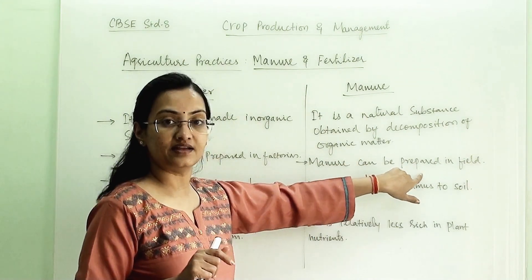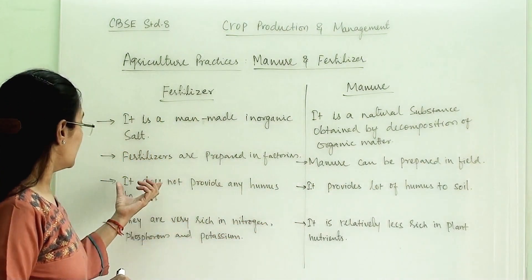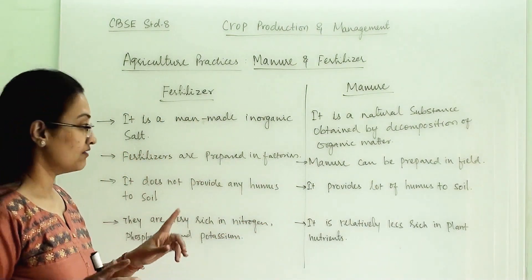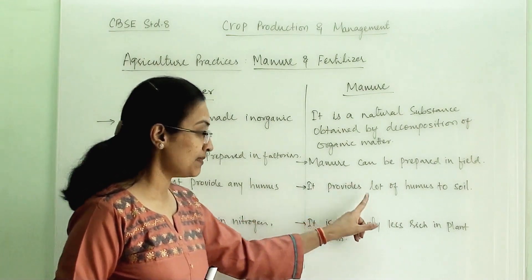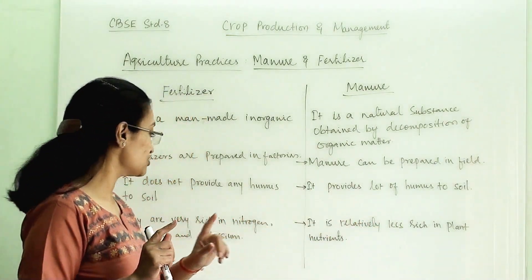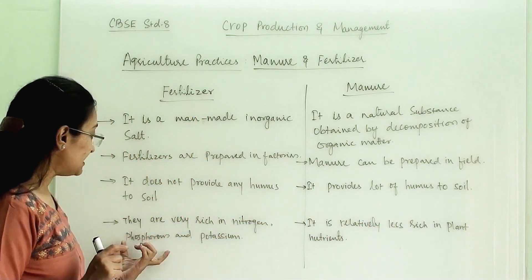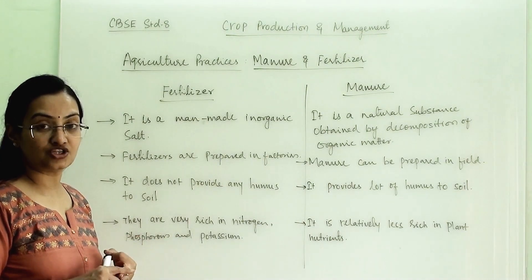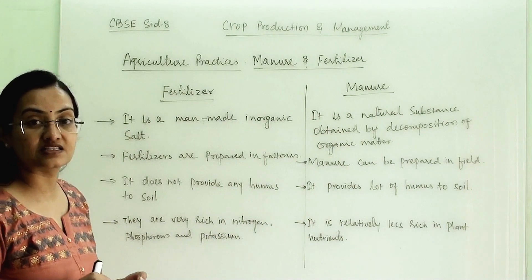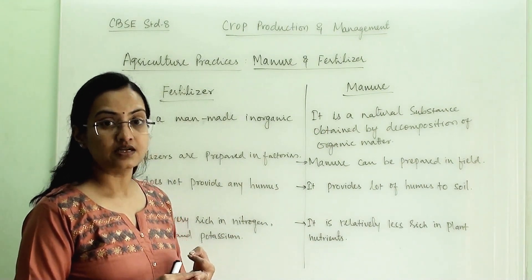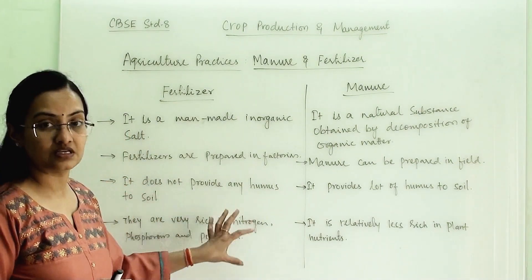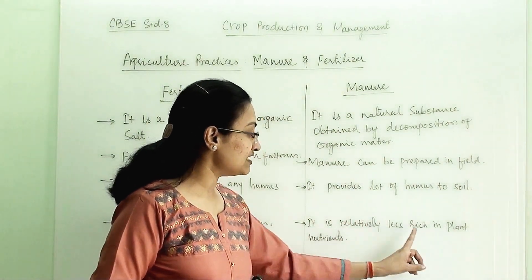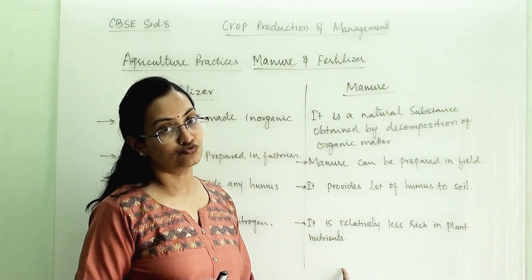Manure can be prepared in the field. Fertilizer will not provide any kind of humus to the soil, whereas manure will provide a lot of humus to the soil. Fertilizers are very rich in nitrogen, phosphate, and potassium — as we know, one fertilizer is NPK fertilizer, rich in all these nutrients — whereas manure is relatively less rich in plant nutrients.